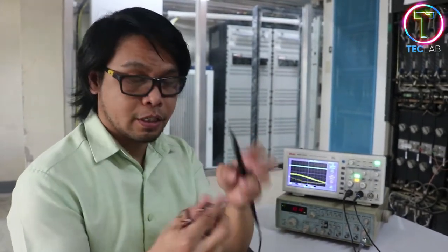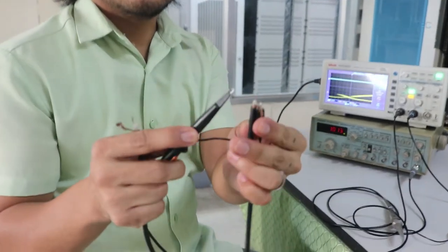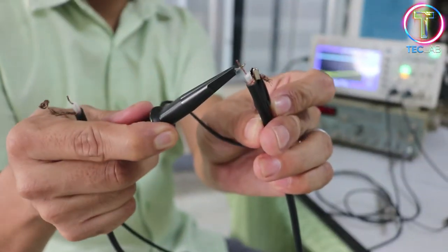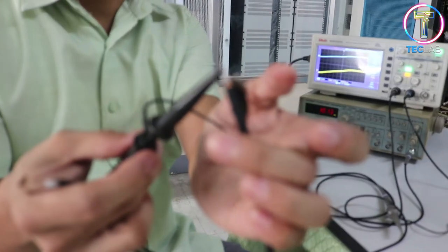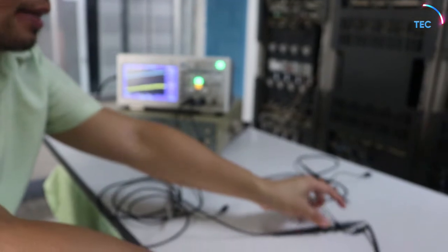So this is our first channel probe. Make sure that there will be no short circuit between the ground and your center conductor. So there you go. So this is the input.